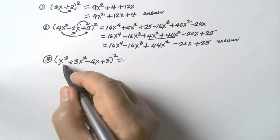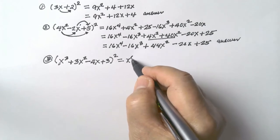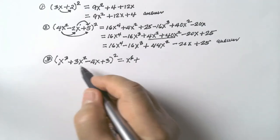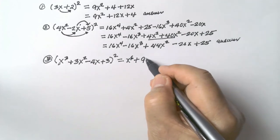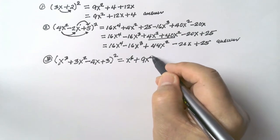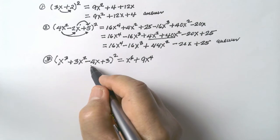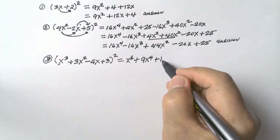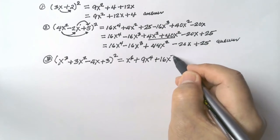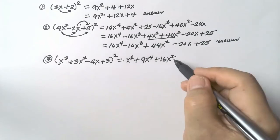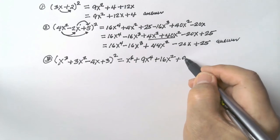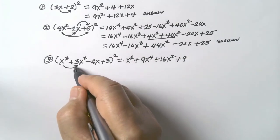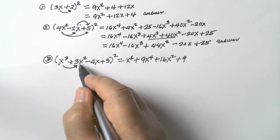x cubed times x cubed = x to the exponent of 6. Square the second term: 3x squared squared = 9x to the exponent of 4. Negative 4x times negative 4x = positive 16x squared. 3 times 3 = positive 9. Distribute the first and second terms: x cubed times 3x squared = 3x to the exponent of 5.